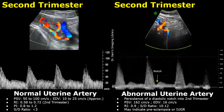This is another example of an abnormal uterine artery spectral Doppler during the second trimester. We find the early diastolic notch here. The resistive index is increased, and the SD ratio is 10.12, which is very high. So this is abnormal. These types of abnormal values may indicate preeclampsia or intrauterine growth restriction.